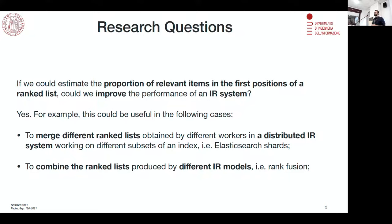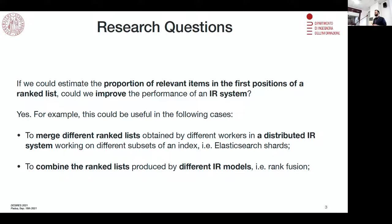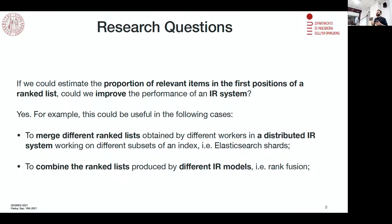The first situation where this would be useful is merging different rank lists computed by different workers of a distributed IR system. Most large-scale IR systems work with a distributed index — think about Elasticsearch shards. Different workers perform retrieval on different subsets of a large collection and each produce a results list, which is then merged to produce a final results list the user sees. If we could estimate the proportion of relevant documents each ranked list contains, we'd be able to merge them better.